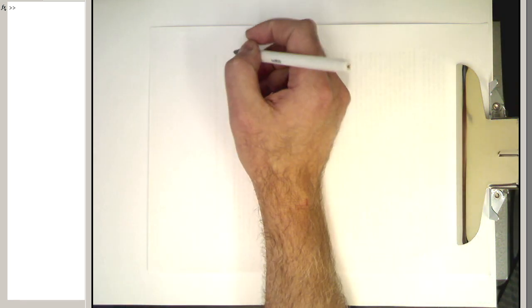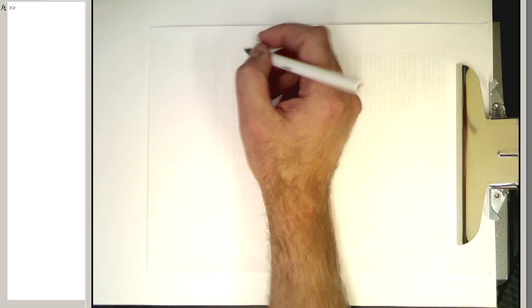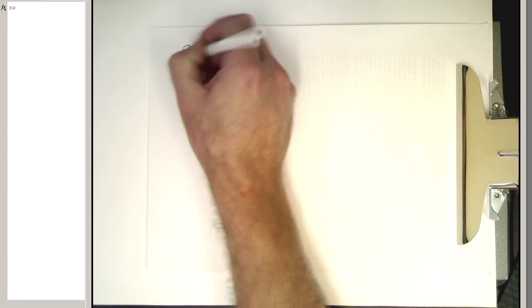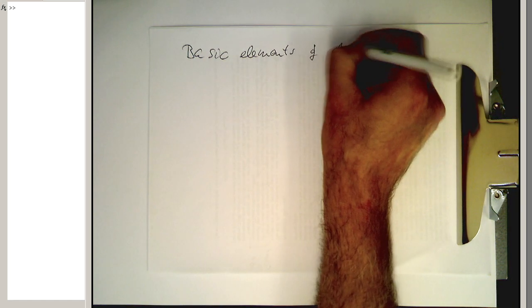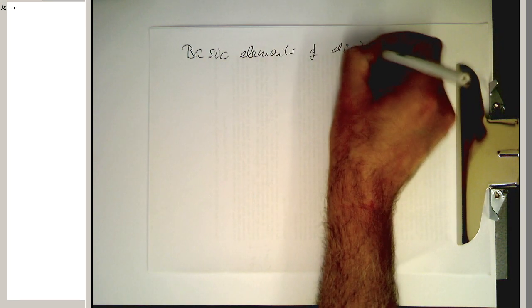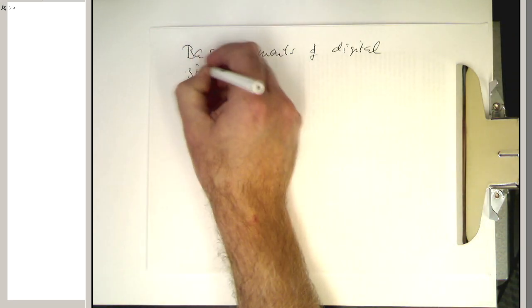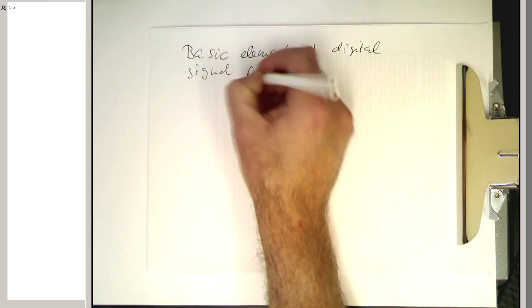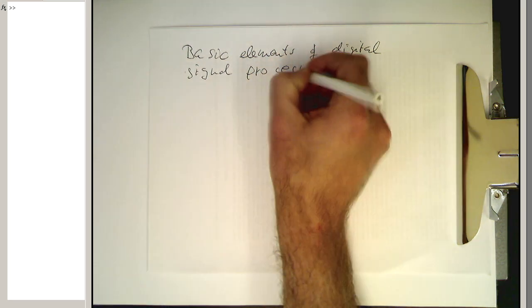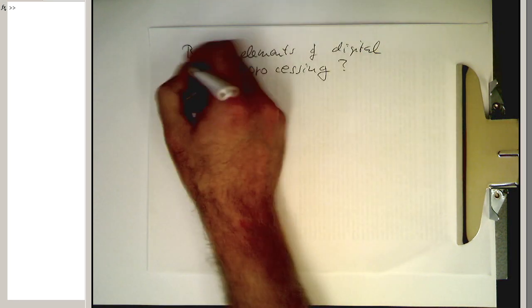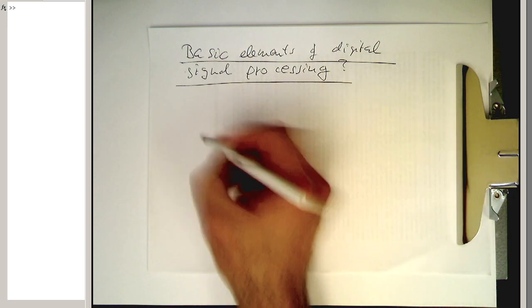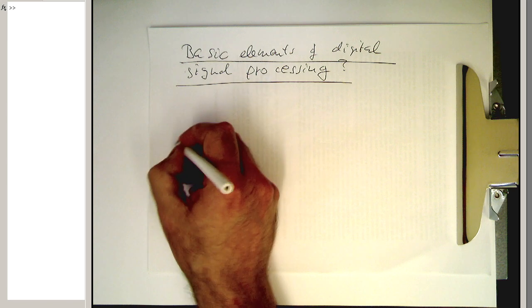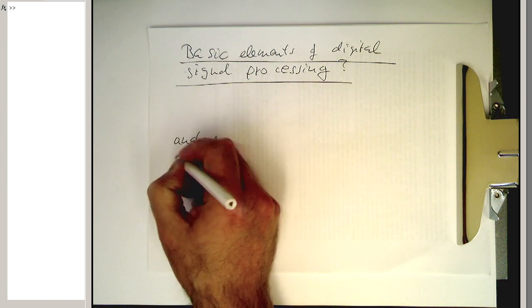Let's start now really with the digital signal processing. What are the basic elements of digital signal processing? What are the basic elements?